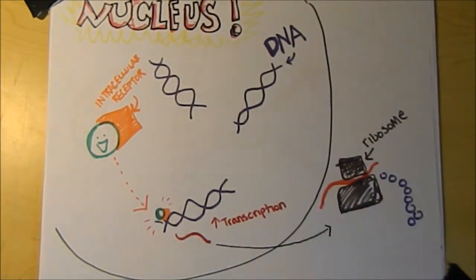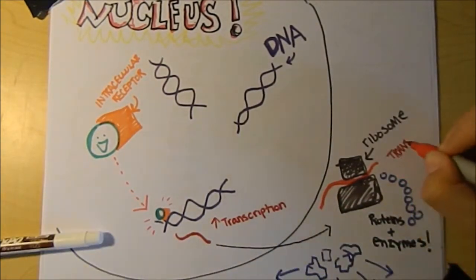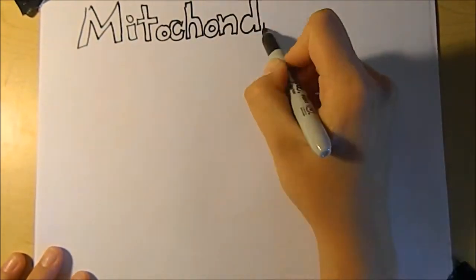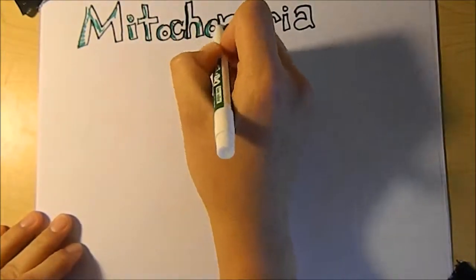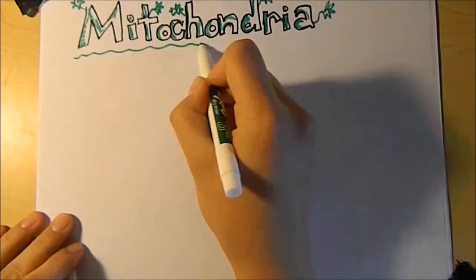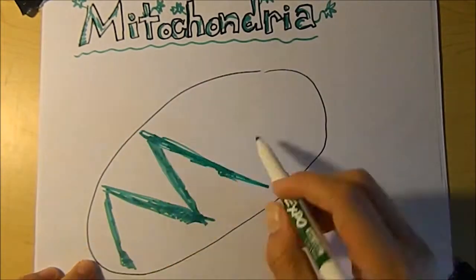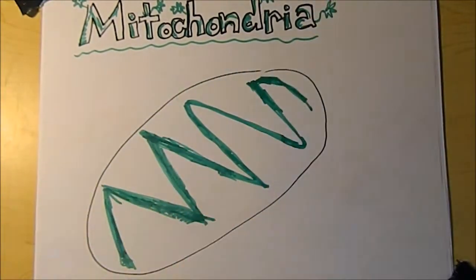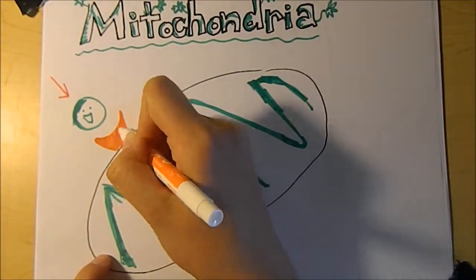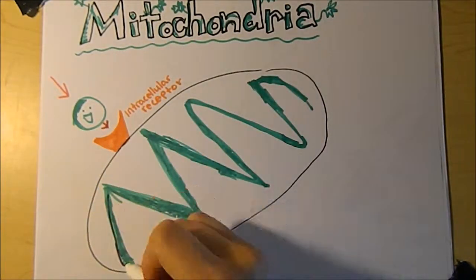Enzymes involved with glycolysis and ATP production are made and set to perform their functions. The mitochondria is known as the powerhouse of the cell. When a thyroid hormone comes, it binds to an intracellular receptor on the mitochondria. This causes it to make more ATP.